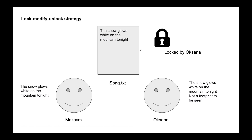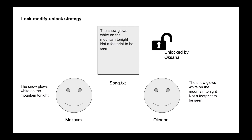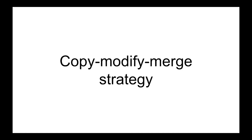Nobody else can work with the server copy because it's locked by Oxana. She updates her version, commits the latest changes to the server file, and then unlocks the file. Now any other developer can read and modify the data — previously they could only read without updating or modifying. The next strategy is copy-modify-merge, which is more complex but mostly used today.